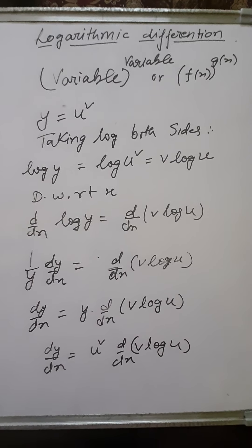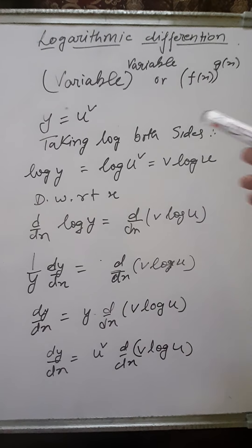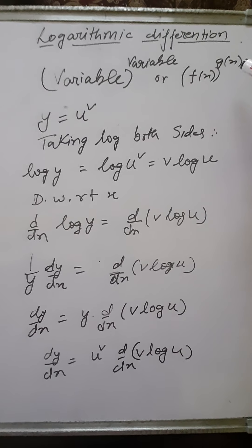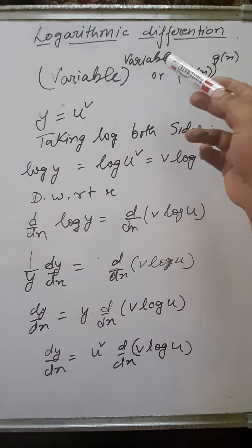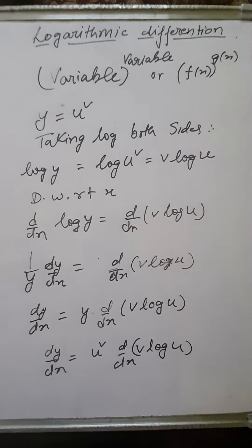So when the function is given in the form variable to the power variable, or function to the power function — like f(x) to the power g(x) — we are going to apply log first to simplify the function and then differentiate it. Suppose the function is given as y equals to u to the power v, where u is a variable and v is also a different variable, so the function is in the form of variable to the power variable.